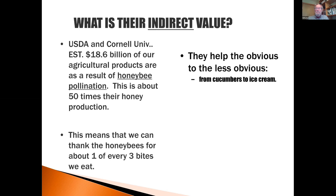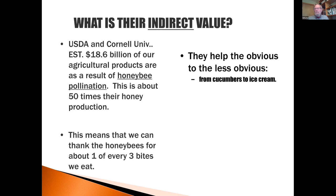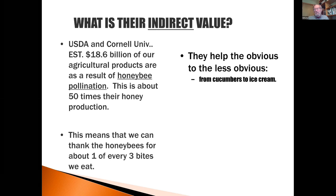I like to say it's from cucumbers to ice cream. When I was teaching a class for young school kids, I asked them if there's anything they could think of that bees didn't help make. One of them said ice cream. I said, actually, bees do help make ice cream because they pollinate clover and alfalfa, which feeds cattle who make the milk that makes the ice cream. So bees help in a lot of things.